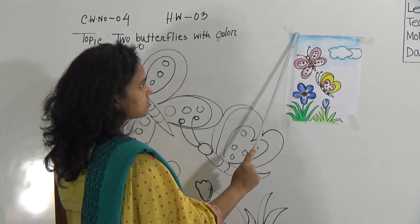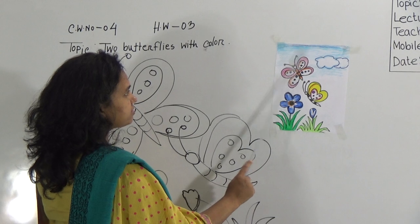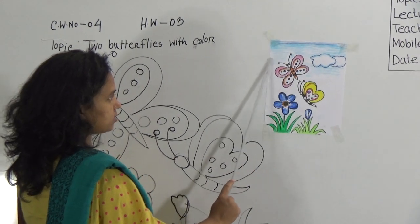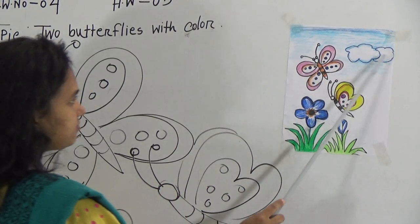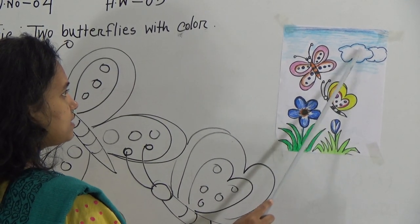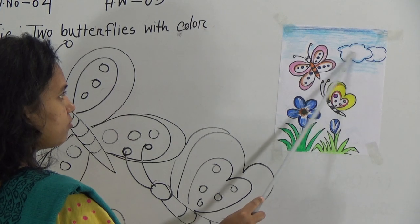I have used here first deep blue. Then very softly I have sketches here sky blue colour. And left some place like it's cloud. A white cloud. So that I have left white space.